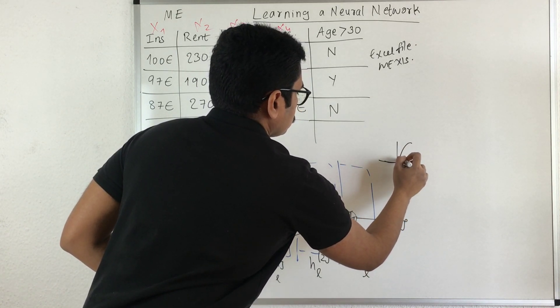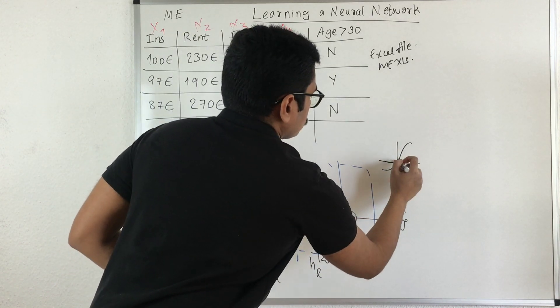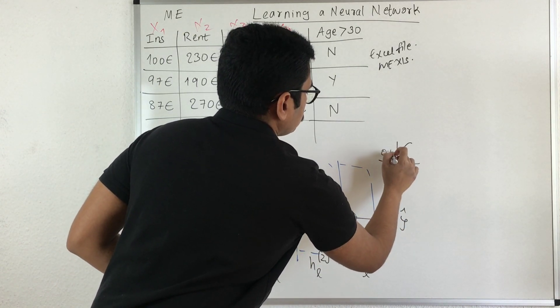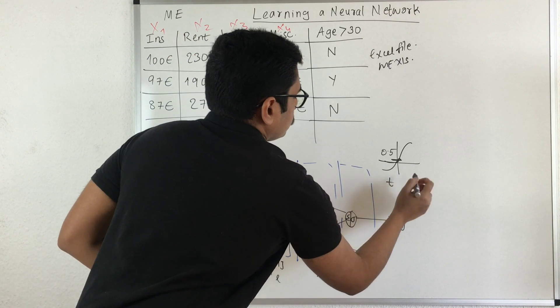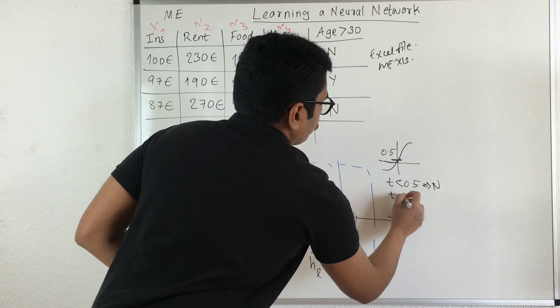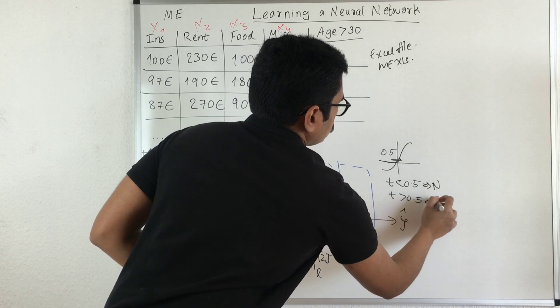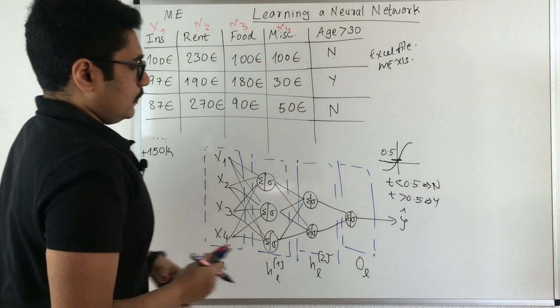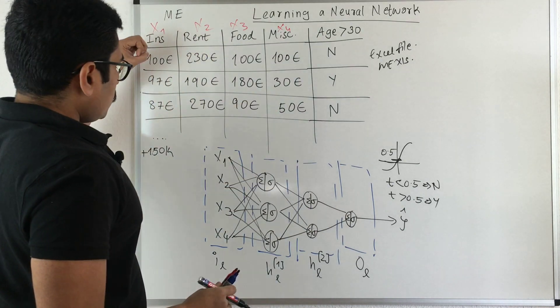Say you have this sigmoid function. Here I am putting a threshold as 0.5. Whatever the threshold value is less than 0.5, that belongs to the no class, and greater than 0.5 belongs to the yes class.